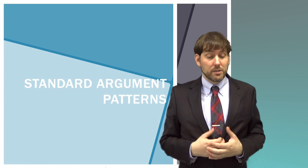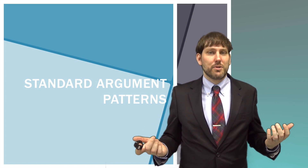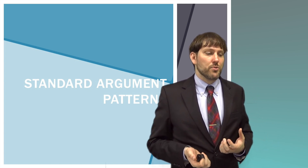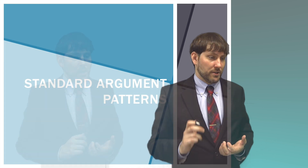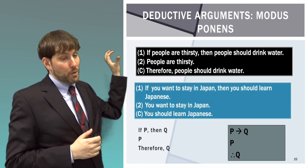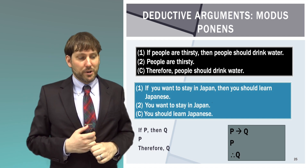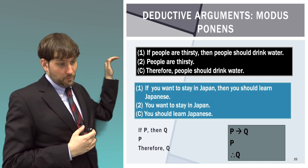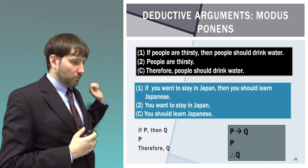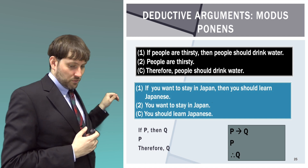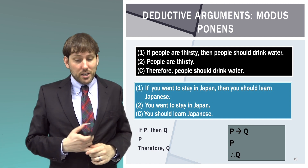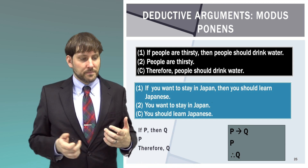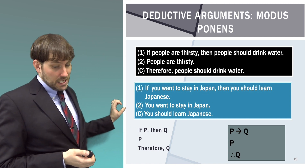Let's look at standard argument patterns — these are extremely important and are patterns used every day, at least in the Western world. The first is modus ponens: 'If people are thirsty, then people should drink water. People are thirsty. Therefore, people should drink water.' We have an if-then sentence, the condition is fulfilled, and the result follows. Another example: 'If you want to stay in Japan, then you should learn Japanese. You want to stay in Japan. Therefore, you should learn Japanese.' The pattern is: if-P then-Q; P; therefore-Q.